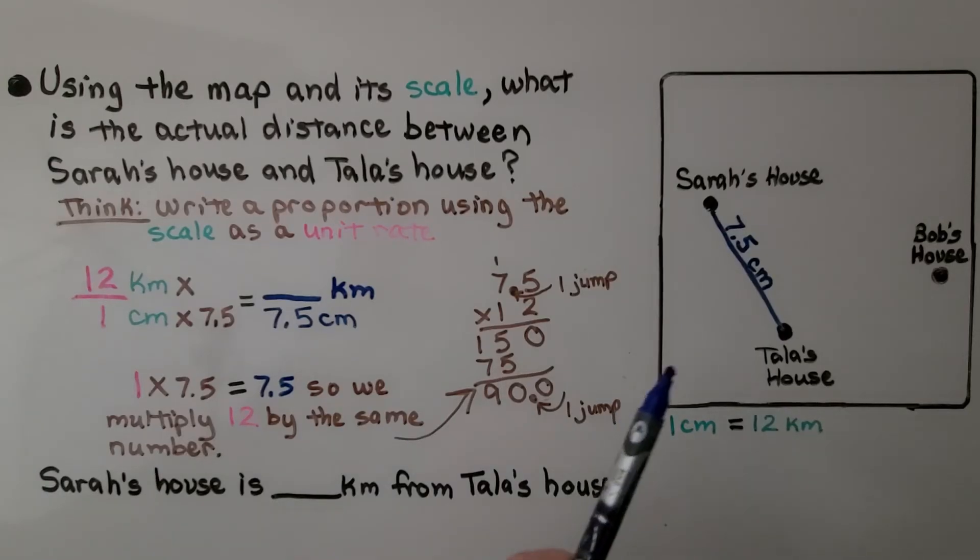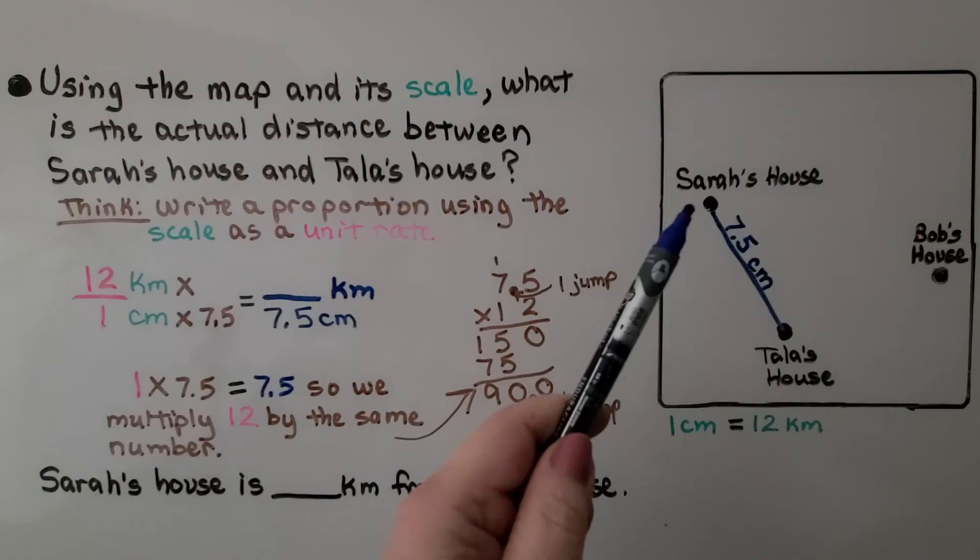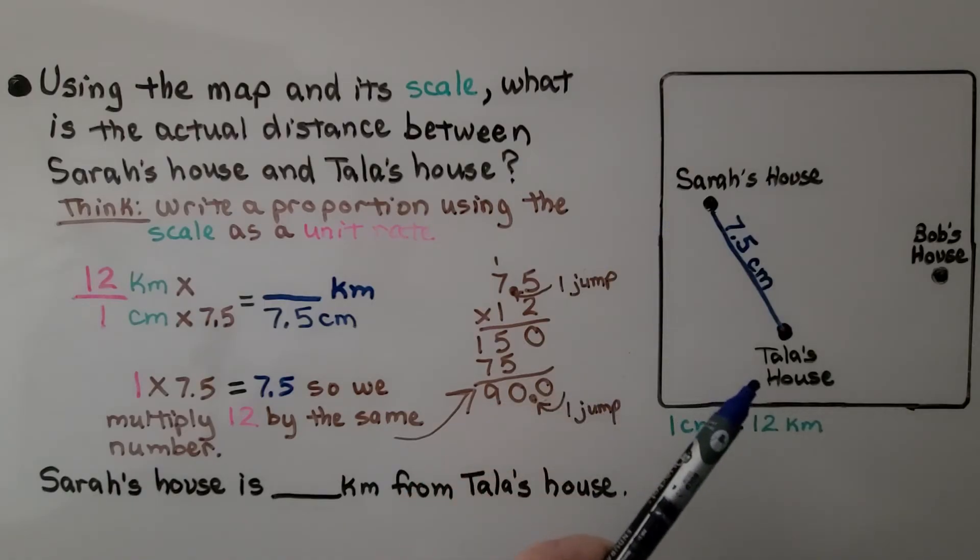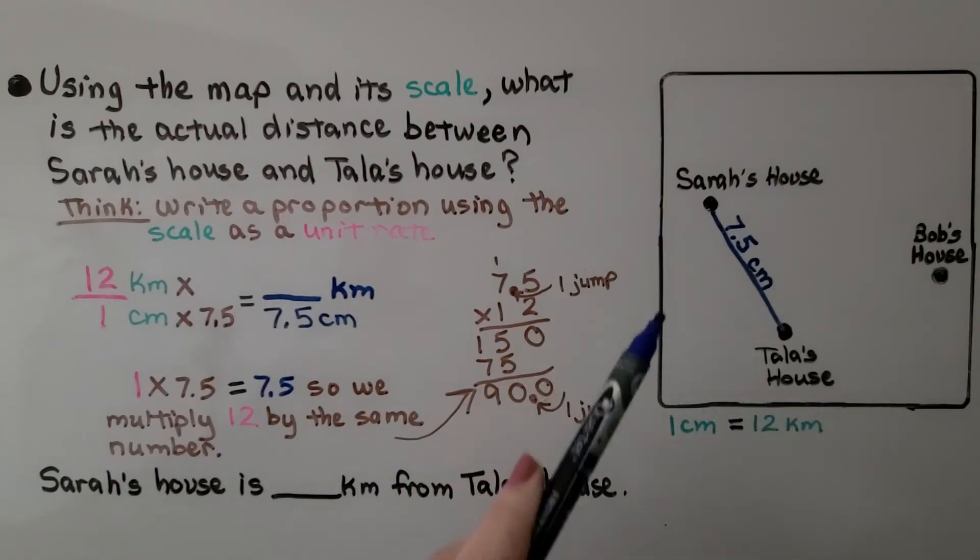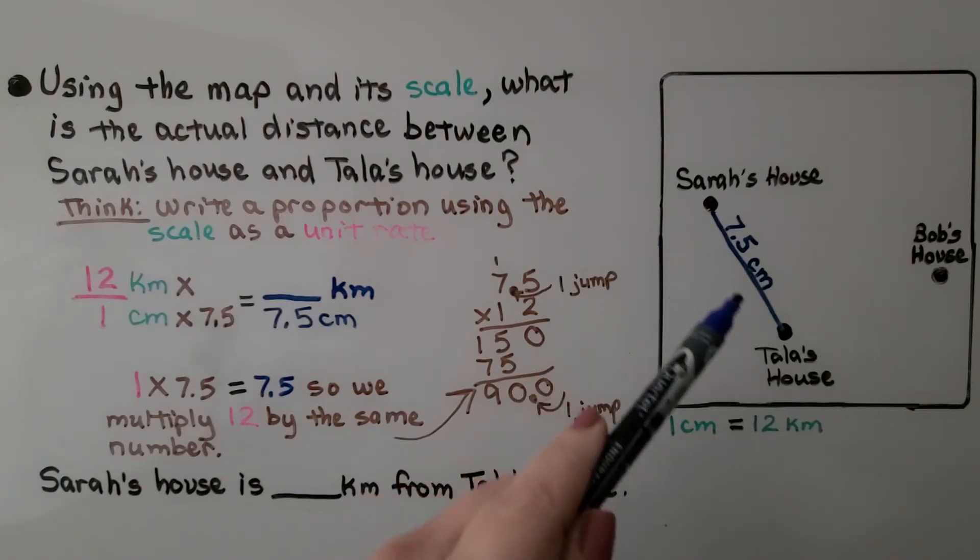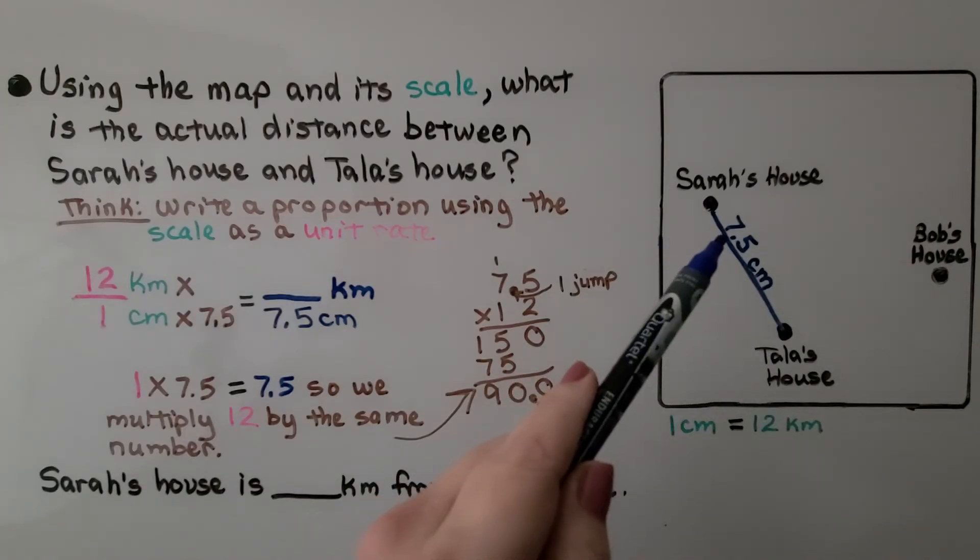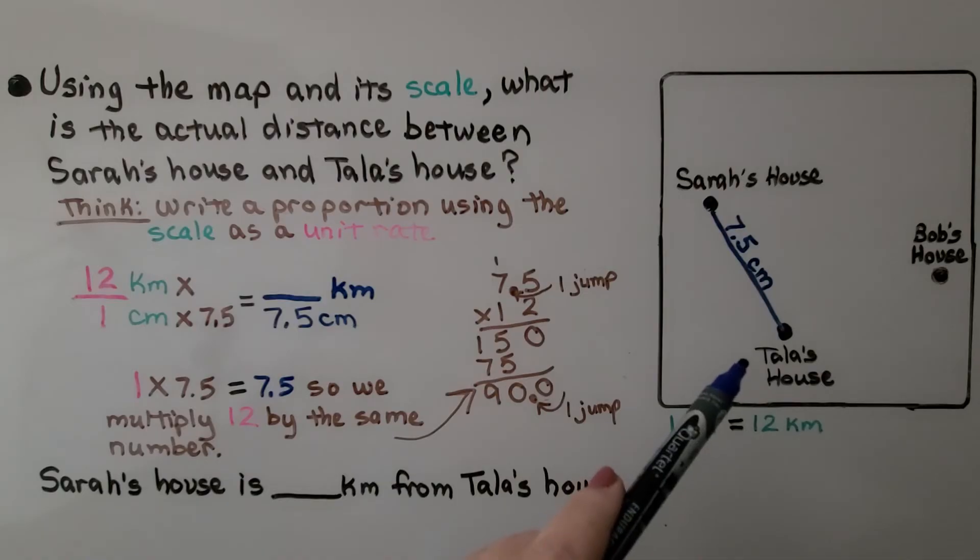Here we have a very simple drawing. It's saying here's Sarah's house, here's Tala's house, here's Bob's house. And it's telling us that Sarah's house is 7 and 5 tenths centimeters from Tala's house. And our scale is 1 centimeter equals 12 kilometers. So using the map and its scale, what is the actual distance between Sarah's house and Tala's house? We write a proportion using the scale as a unit rate.